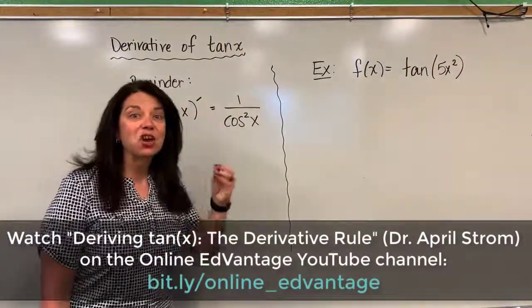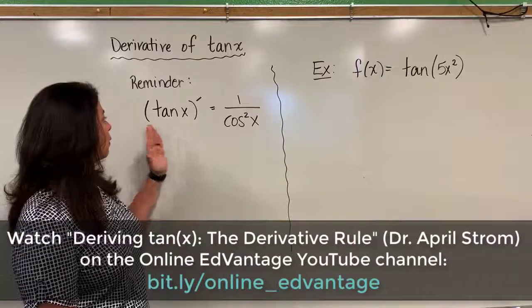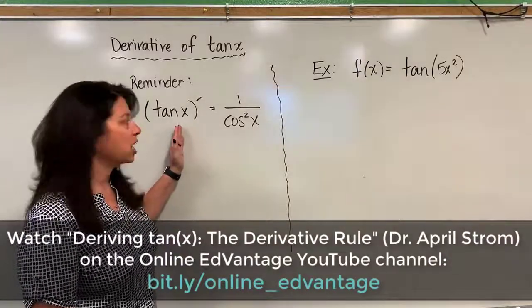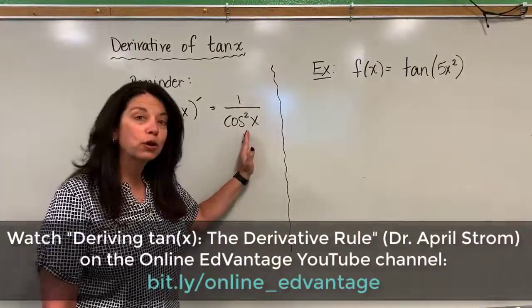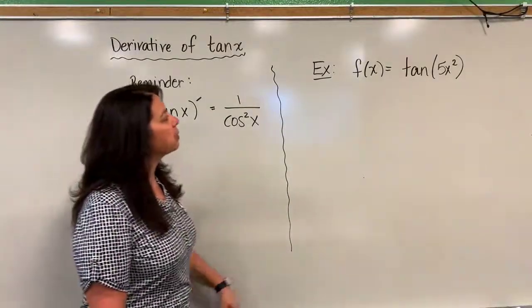So if you want to see that again, go back to the other video to see how in fact we got the derivative of tangent X to equal one over cosine squared X. So let's explore an example.